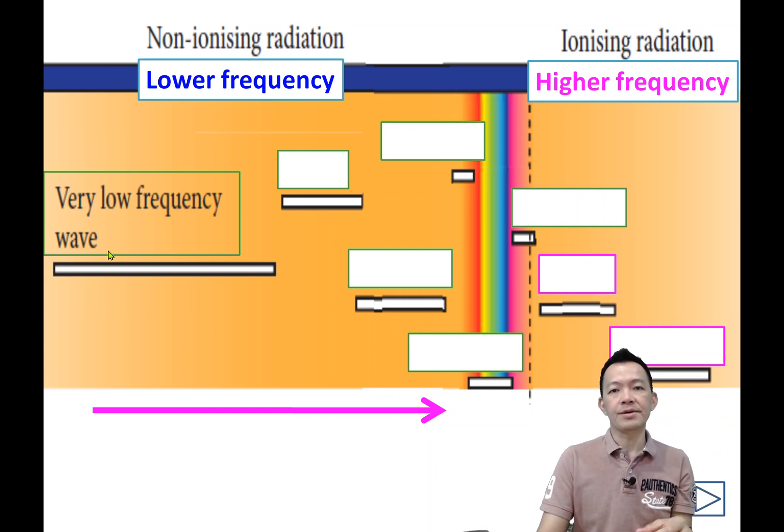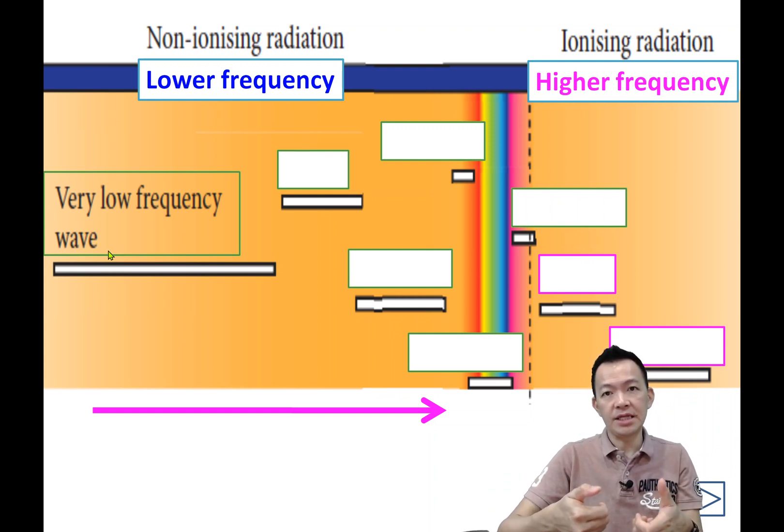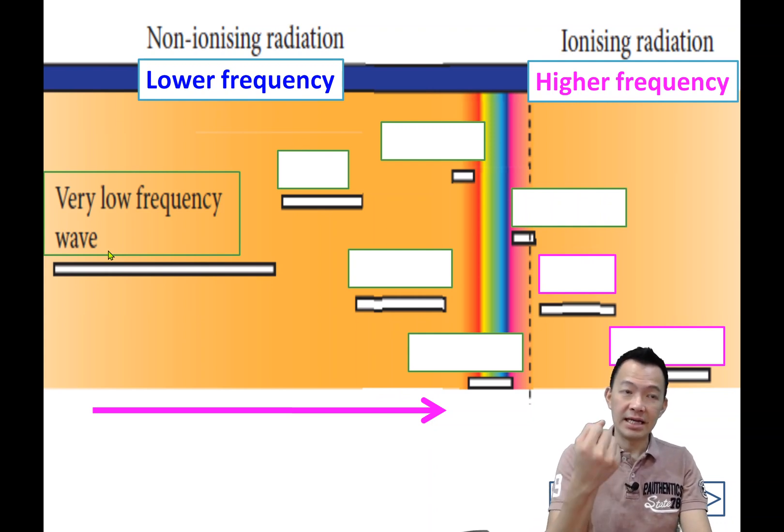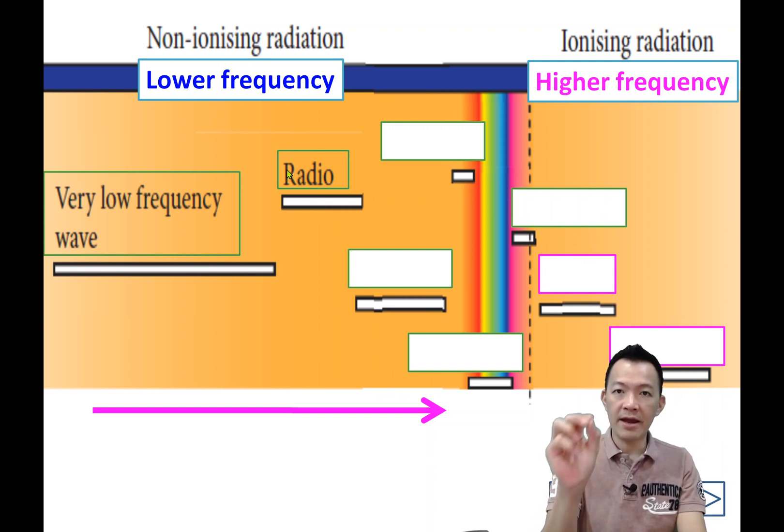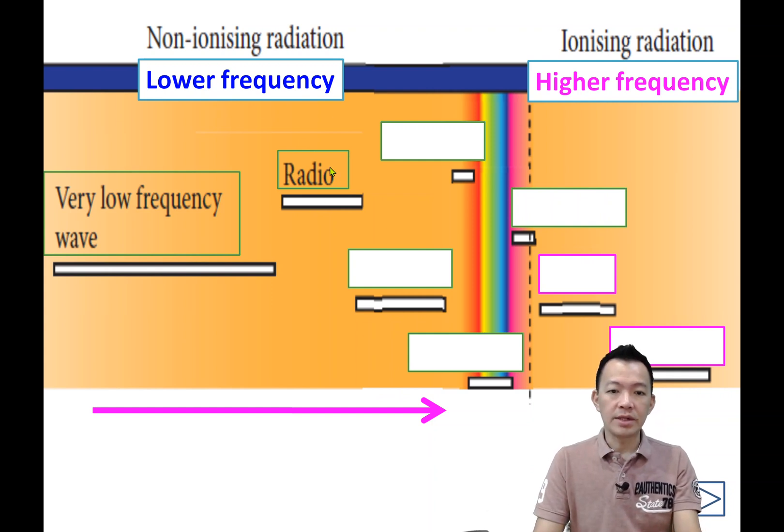Any example of non-ionizing radiation with low frequency? Number one, very low frequency wave. For example, if you have a remote control car that costs 45 ringgit, your remote control operates at 49 MHz. This is low frequency. Besides this, radio waves like FM radio when you're driving.